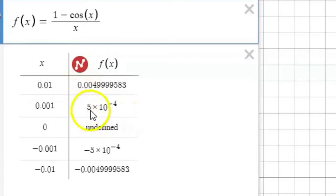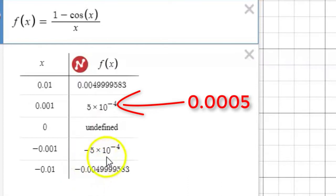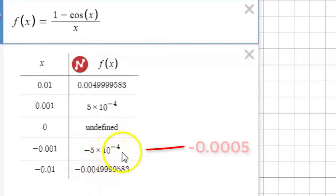Watch the notation here. 5 times 10 to the minus 4 really means 0.0005. And negative 5 times 10 to the minus 4 means negative 0.0005.